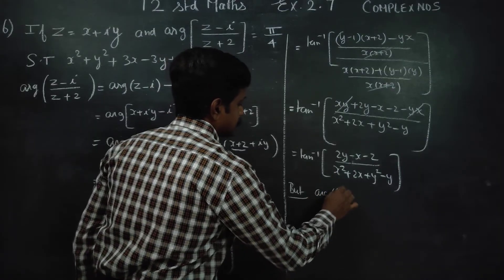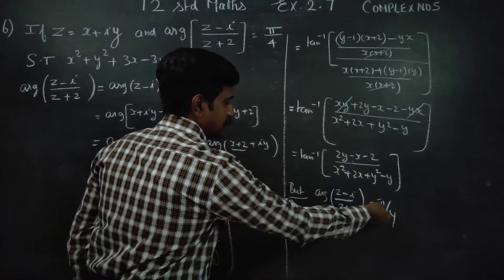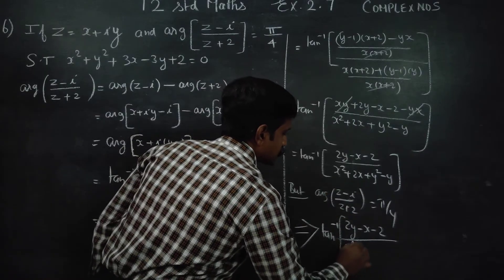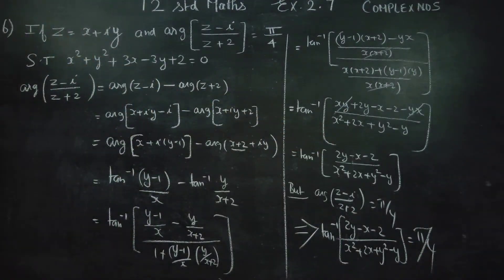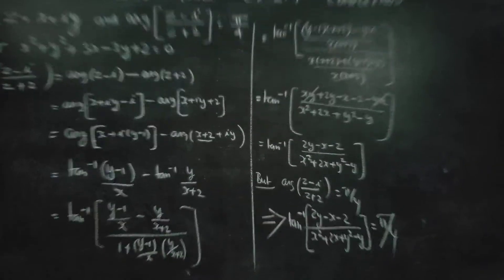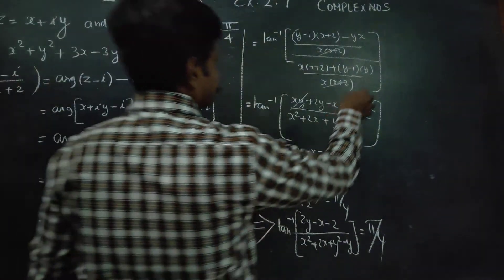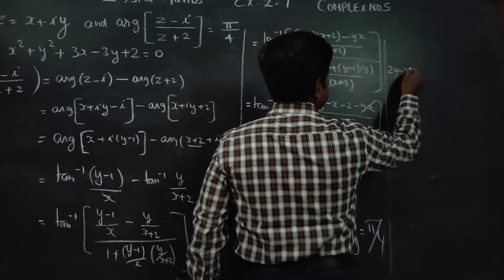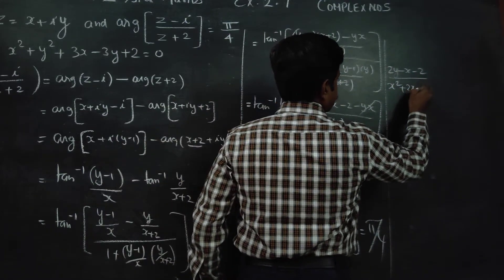So argument of (z minus i) by (z plus 2) equals pi by 4 implies tan inverse of (2y minus x minus 2) by (x squared plus 2x plus y squared minus y) is equal to pi by 4. Taking tan of both sides: (2y minus x minus 2) divided by (x squared plus 2x plus y squared minus y) equals tan(pi by 4).